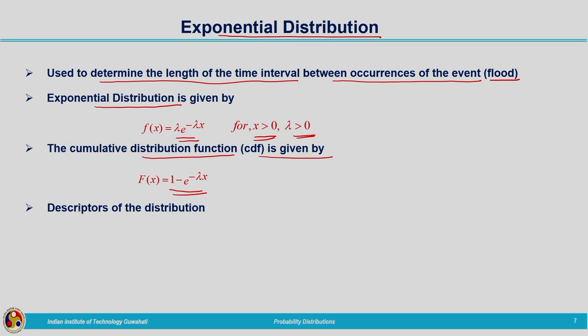Coming to the descriptors of exponential distribution: mean is given by 1 divided by lambda, and variance is given by 1 divided by lambda squared. Since variance is 1 by lambda squared, standard deviation will be 1 by lambda.